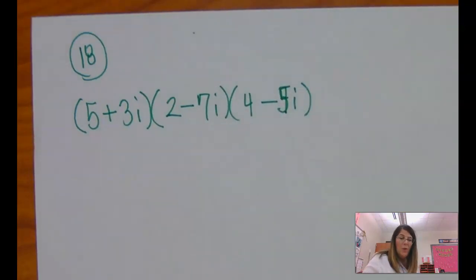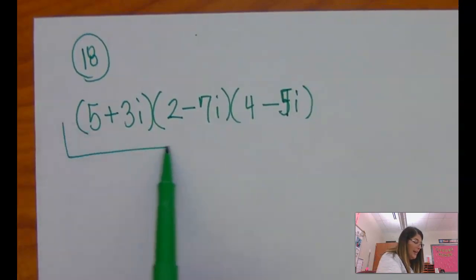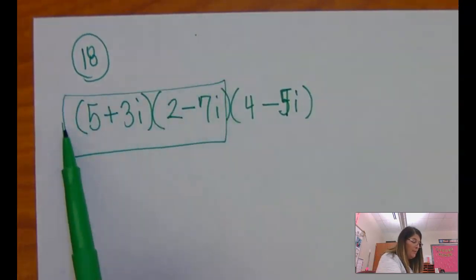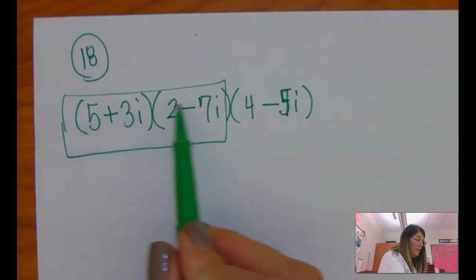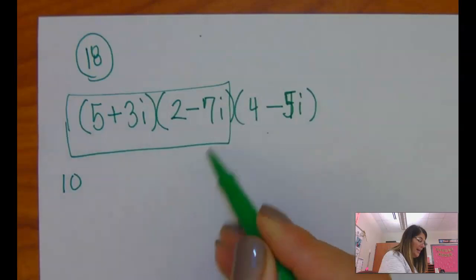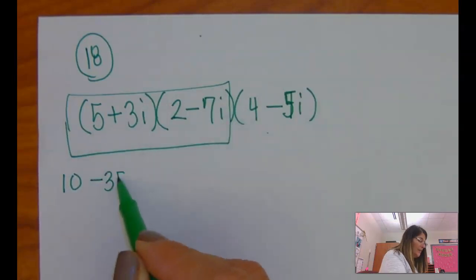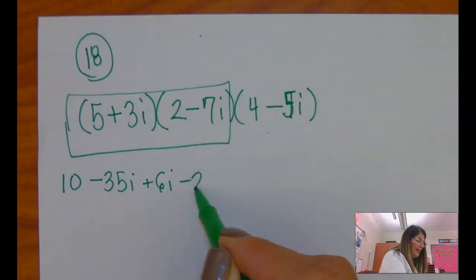Okay, so what we're going to do is we're going to take two of them, any two of them, and foil those out and simplify it, and then I'll multiply it by this one. So when I foil this out, it becomes 10 minus 35i plus 6i minus 21i squared.